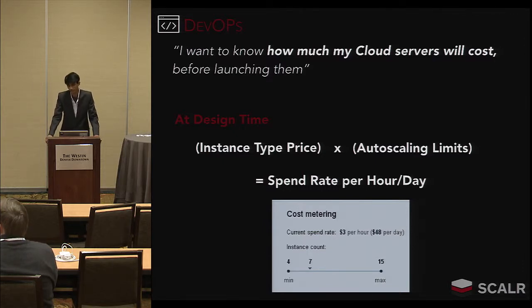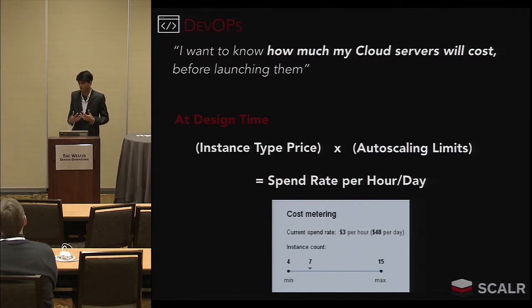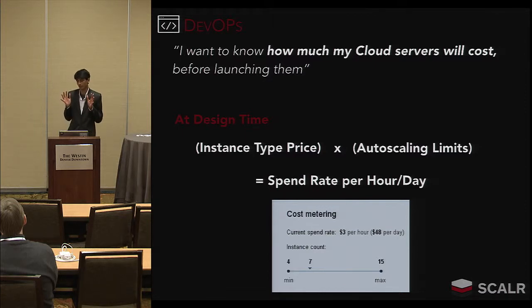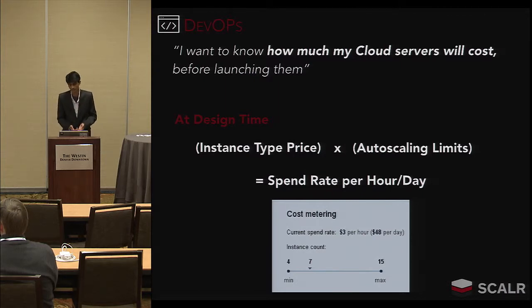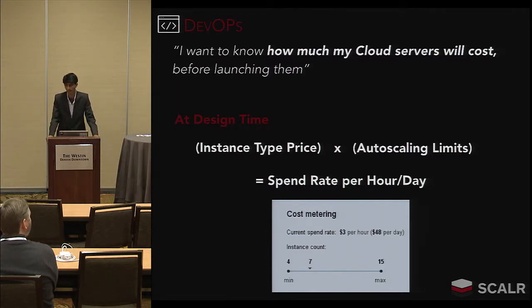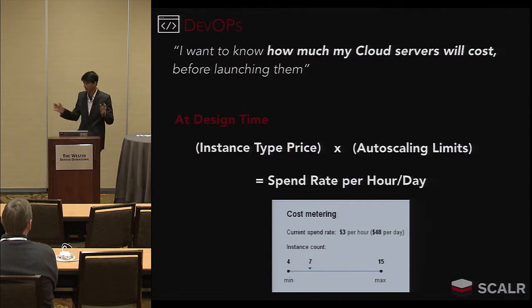Why is this useful? It enables developers to think critically about provisioning hardware. They can ask themselves: do I actually need a server that big? Before, when servers were just M1 large or M1 small, developers didn't really understand the financial impact. This is also the most basic level of cost savings you can impose. If you teach your developers to utilize efficient instance types, you'll see an overall reduction in cost across your organization.